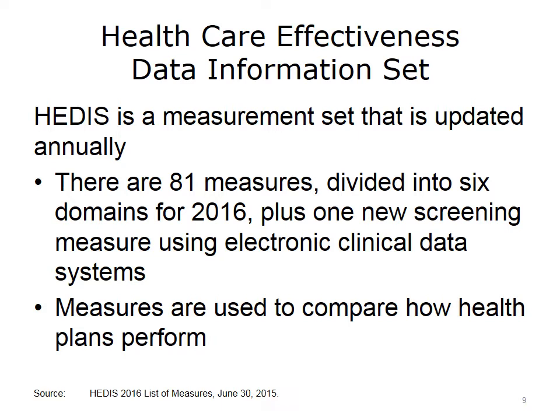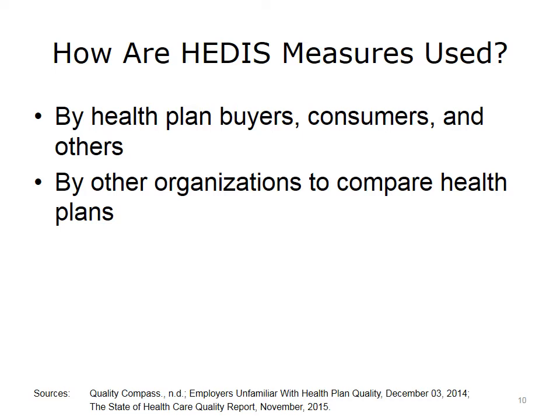For 2016, HEDIS contains 81 quality measures, which fall into six domains: effectiveness of care, access and/or availability of care, experience of care, utilization and risk-adjusted utilization, relative resource use, and health plan descriptive information. In 2016, there is also a first-year measure to track the utilization of the PHQ-9, a screening tool to monitor depression symptoms as reported by patients, collected using electronic clinical data systems. The HEDIS reports are standardized and broad — all health plans report on the same measures. NCQA qualifies the measures so numerators and denominators are the same for everyone, which allows for apples-to-apples comparisons between health plans.